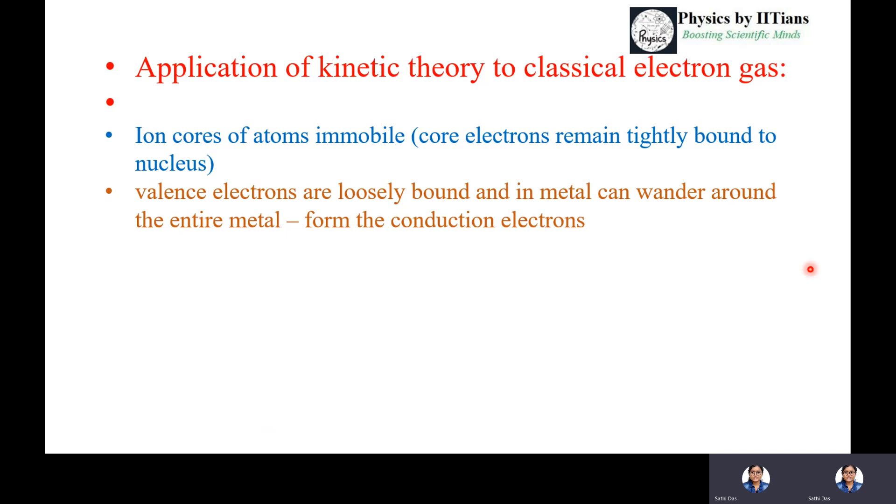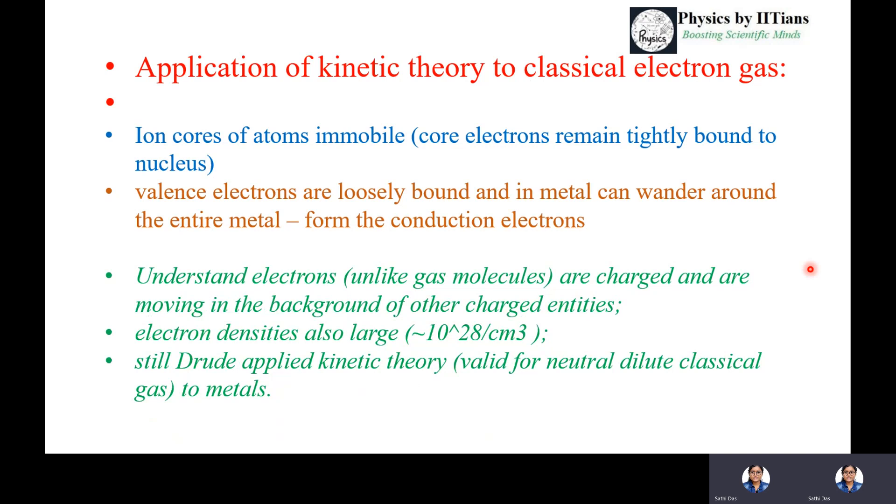These electrons are charged and moving in the background of other charged entities. The electron density is up to the order of 10^28 per centimeter cube in a metal. Drude still applies kinetic theory, which is valid for neutral dilute classical gas, to metals.